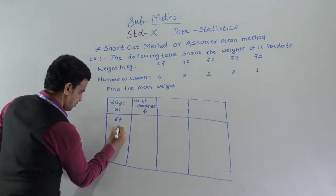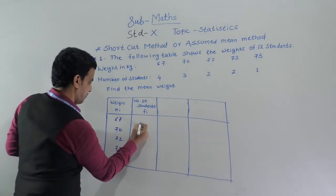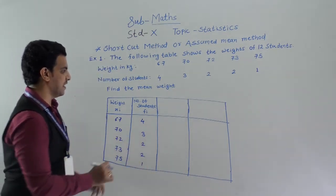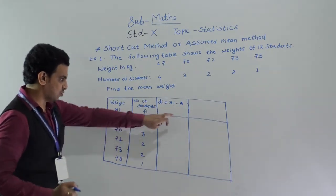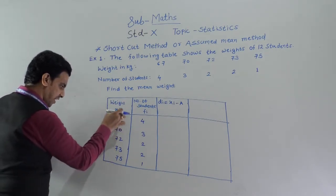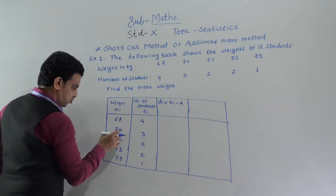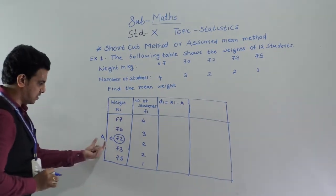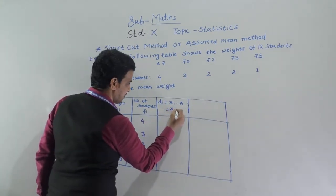We have to find the mean weight. But since the observations are very big, the multiplication fi·xi would be very complex, so we use the shortcut method. First, we write this data in tabular form: xi values are 67, 70, 72, 73, and 75; frequencies fi are 4, 3, 2, 2, and 1. Now we have to find di = xi minus A. First, we have to choose A, the assumed mean, from the xi values. Since there are an odd number of observations, we choose the middle observation, which is 72. So A = 72.